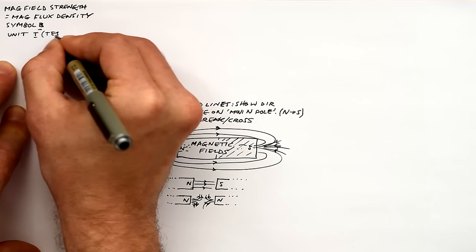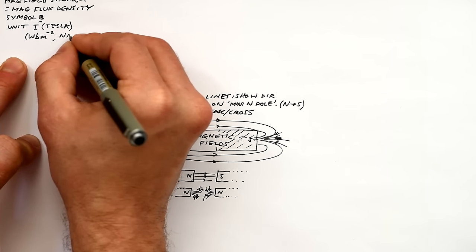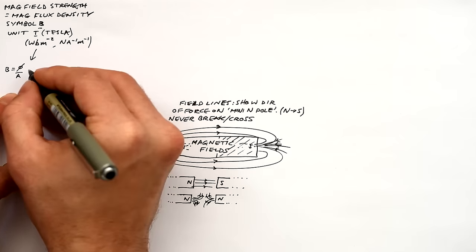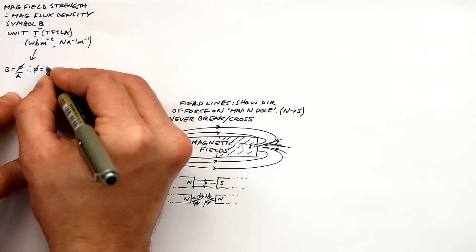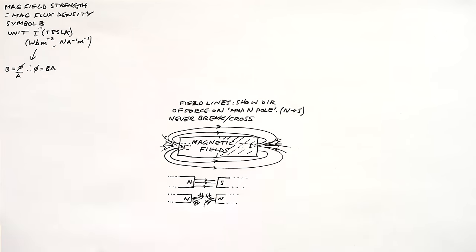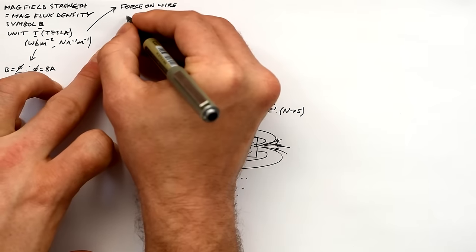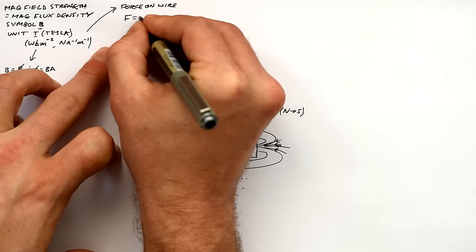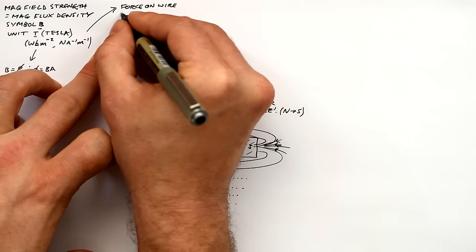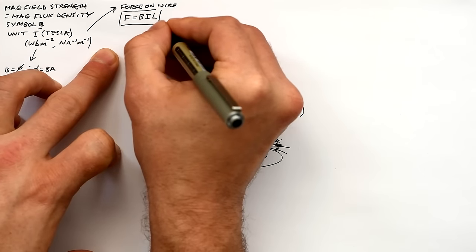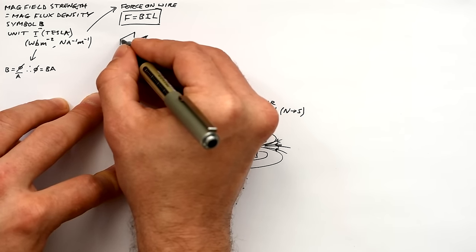For A-level you need the alternative units: V per meter squared and newtons per amp per meter. Flux density equals flux divided by area — phi divided by A — so phi equals BA. The equation for force on a wire carrying a current in a magnetic field, when all are perpendicular, is F equals BIL. We can measure this force by putting magnets on a yoke, placing that on a top-pan balance, and recording the apparent mass change times g.